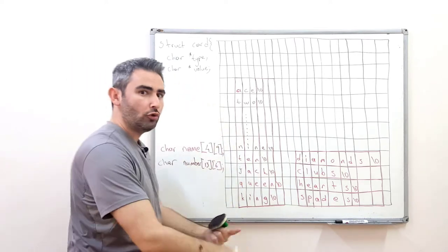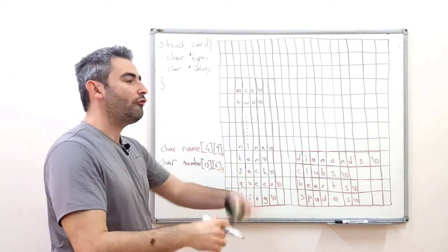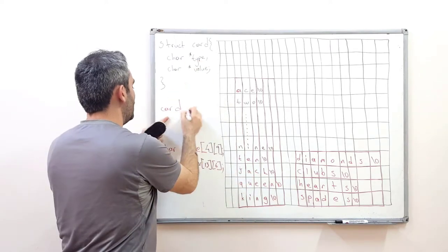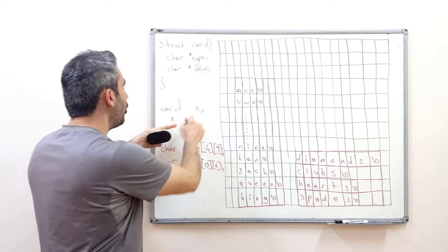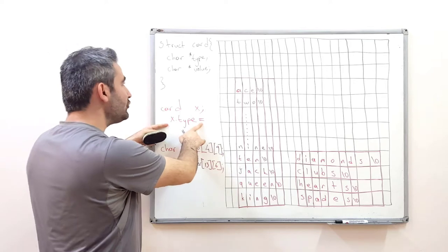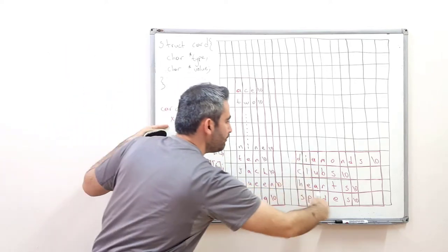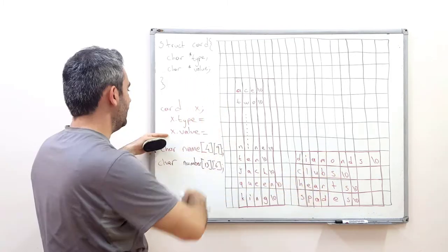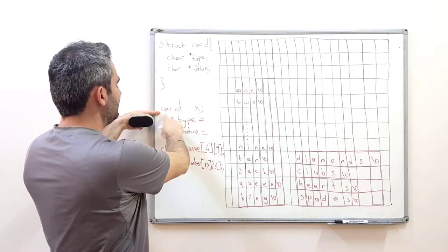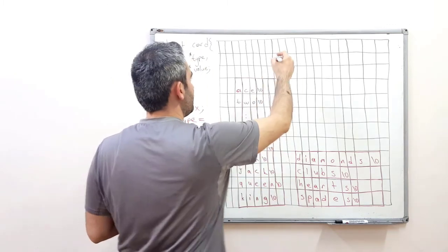Now, before or after defining these arrays, I'm creating an array of objects from this structure. If I say a card X, my X will hold a pointer to a char location. So I'm going to give an address to the type field of my X from one of these rows, and another address to my X's value field from this array. By defining this, I'm actually creating an X in my memory.